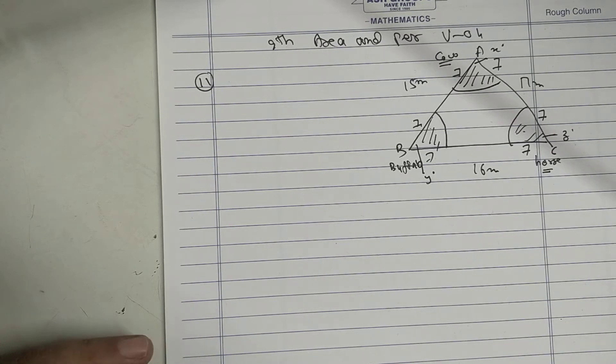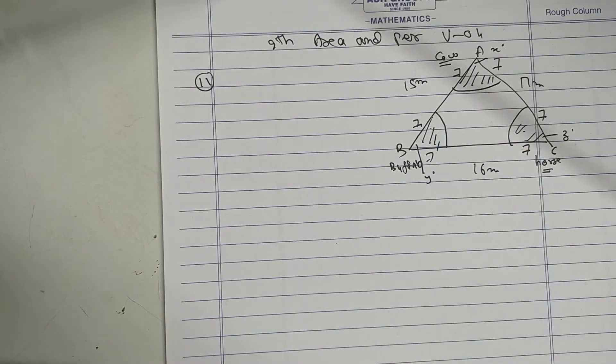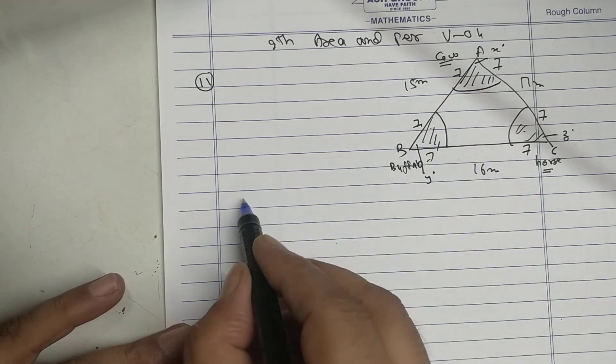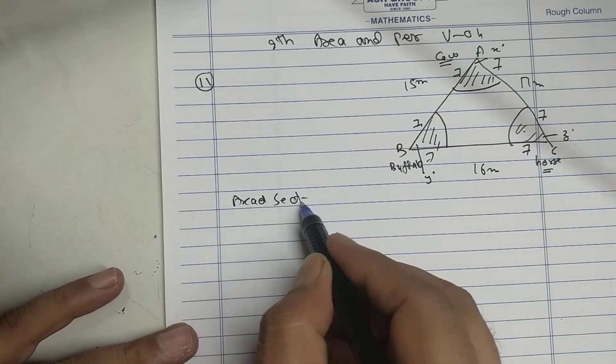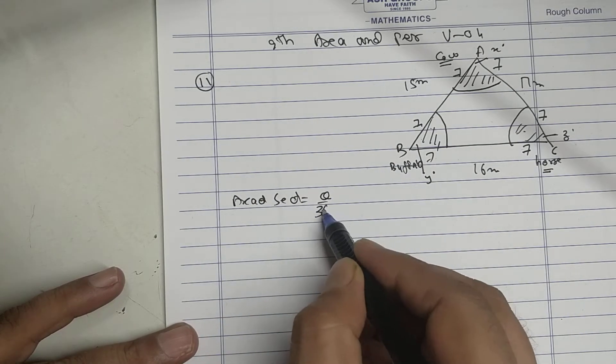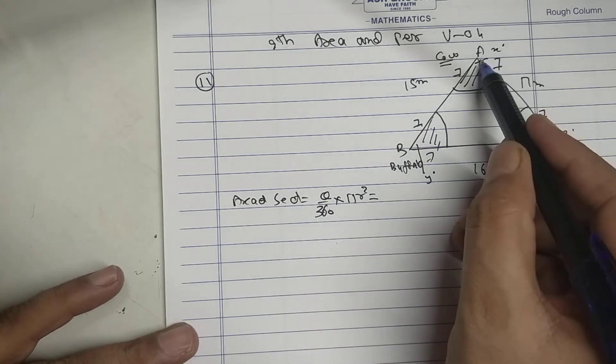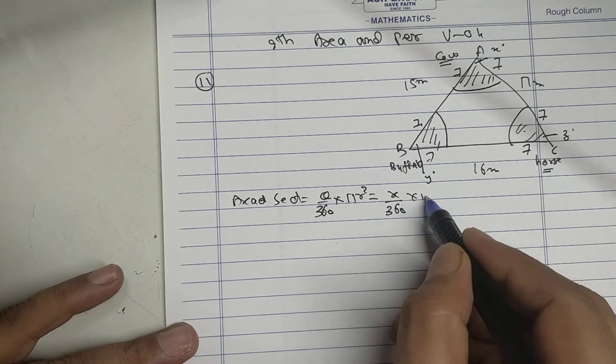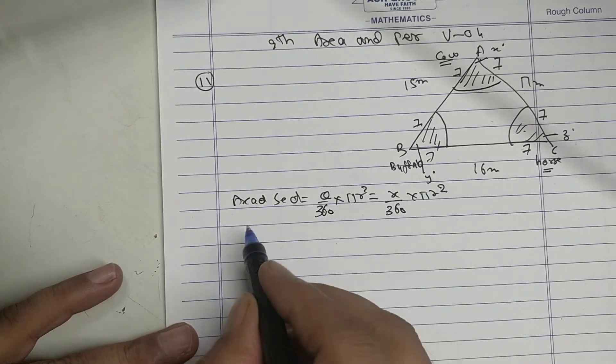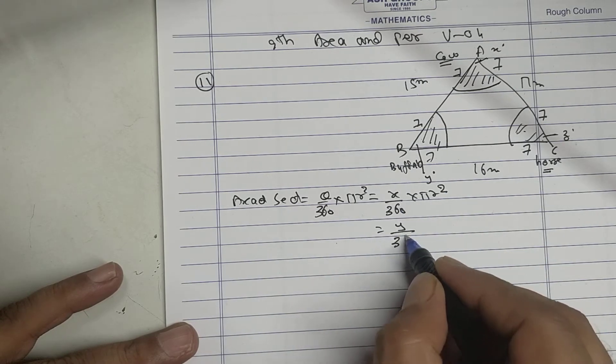First, we know that area of sector is θ/360 × πr². This angle is x, so x/360 × πr². This one is y/360 × πr². The other one is z/360 × πr².